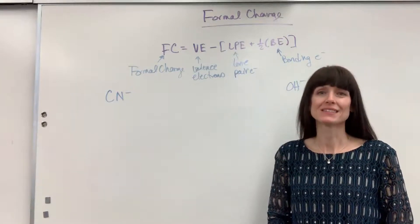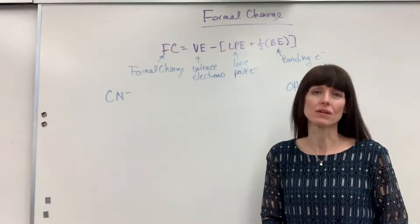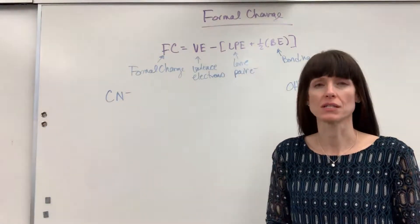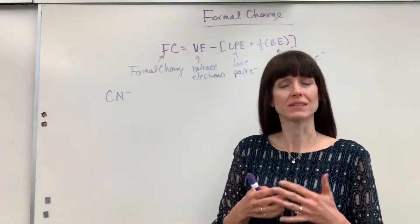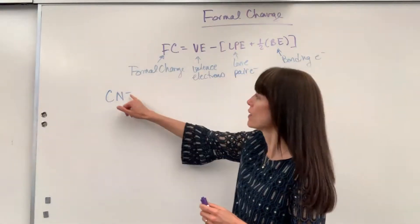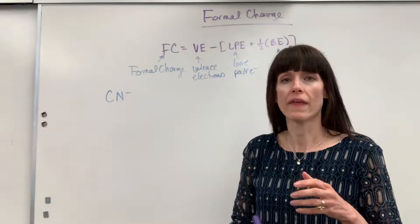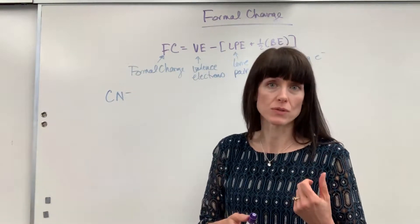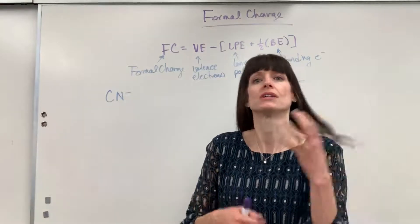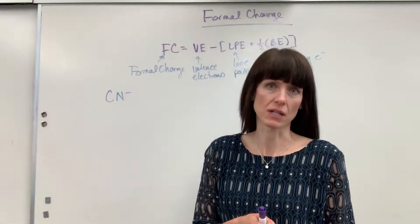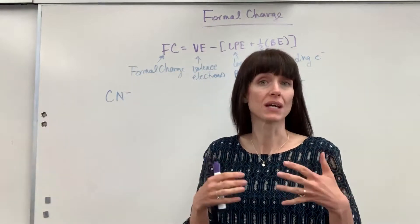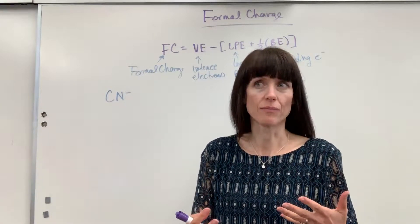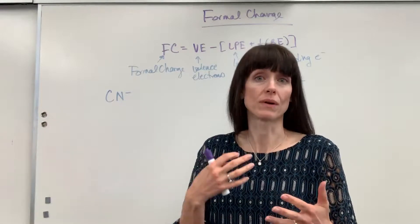Formal charge. This is a nice application that we use with Lewis dot structures. What formal charge does is it allows us to make a best guess of where, in an ion, an electron was added, or if it's a positive cation, where the electron was removed. We use formal charge in addition to our understanding of electronegativity to make a best guess of electron density — where the electrons have been added or removed.